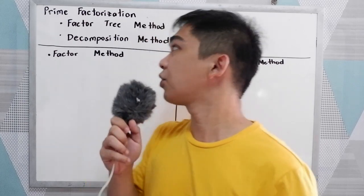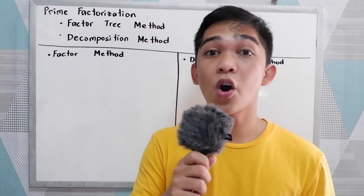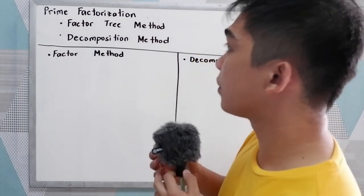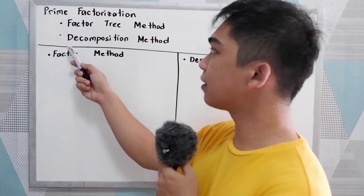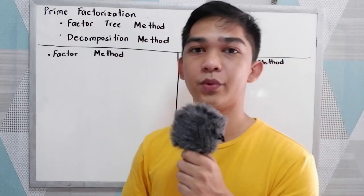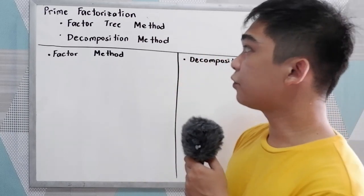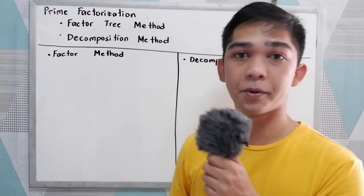Good day everyone. Today I will be discussing prime factorization. The prime factorization is the process of getting the prime factors of a number. We have two methods: the factor tree method and the decomposition method. These are the methods we are going to use to find the prime factors of a certain number.